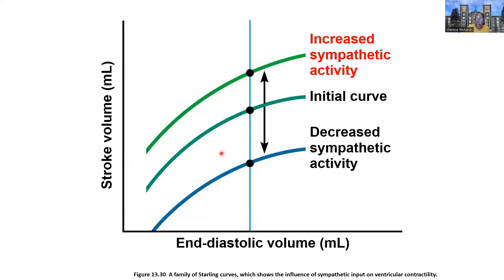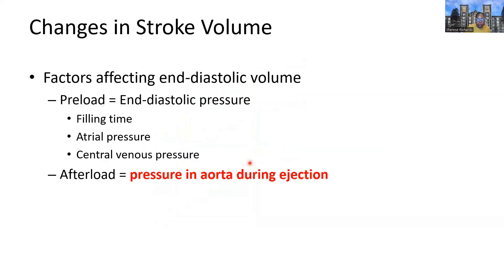This is what Starling's Law means for the heart. Illustrated on a curve: the resting curve represents baseline; decreased sympathetic activity produces less stroke volume for the same fill amount; increased sympathetic activity produces more stroke volume for the same fill amount. The heart simply works harder with increased sympathetic activity. Finally, preload — the amount of filling time, atrial pressure, and central venous pressure — and afterload, the pressure in the aorta against which the chamber must eject, both affect stroke volume.